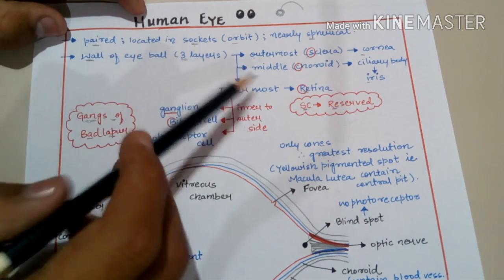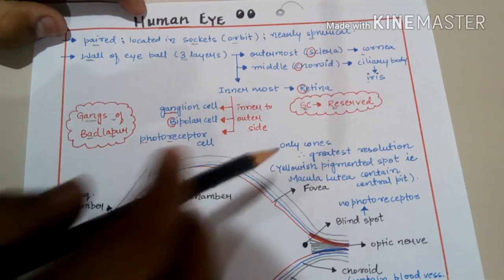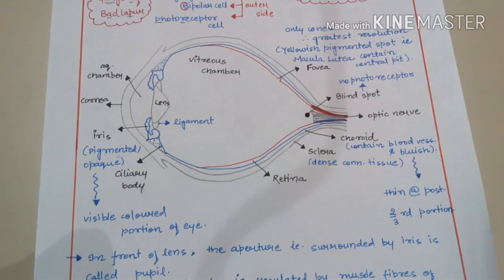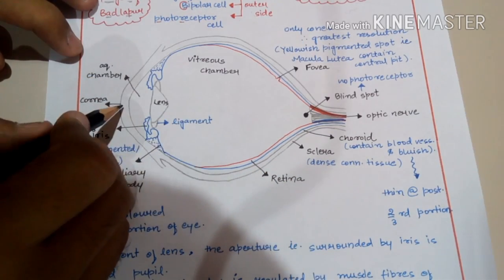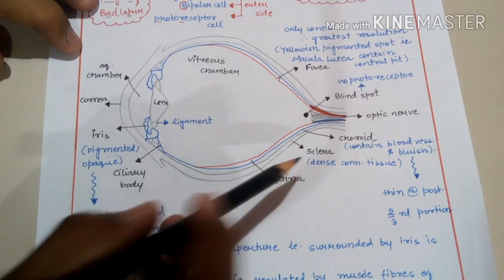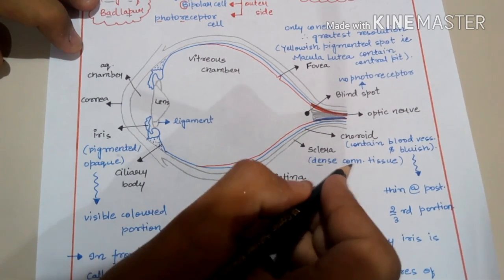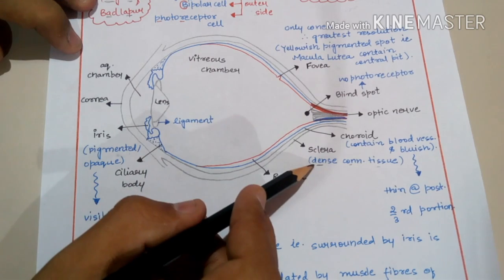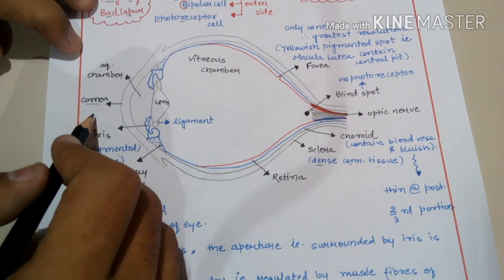Now let's look at the diagram of the eye. The outermost wall layer is the sclera, which is formed above dense connective tissue. Since it is the outermost layer, its major function is protection, which is why it is formed above dense connective tissue. The sclera is thin in the posterior region of the eye, but in the anterior region it is a little bit thicker, forming the cornea.